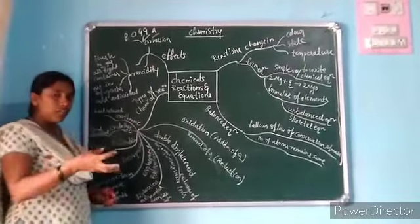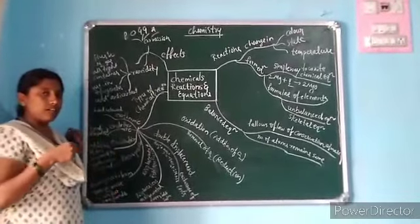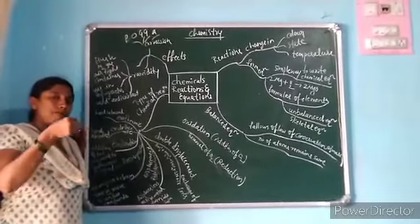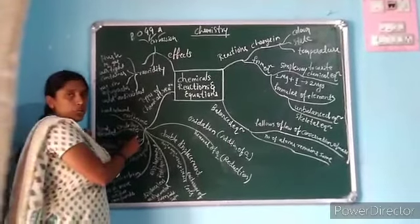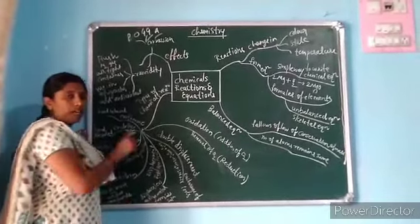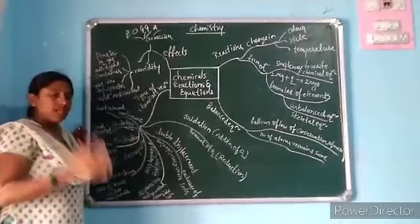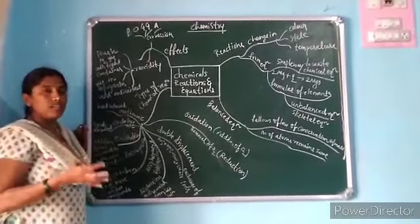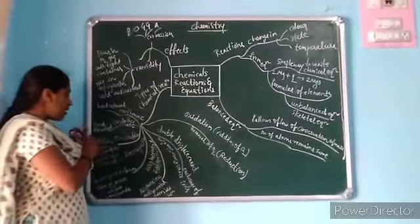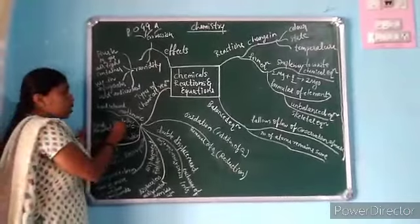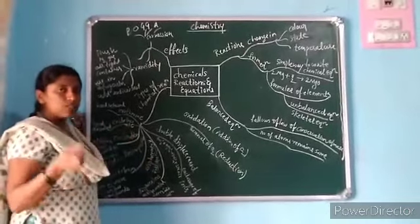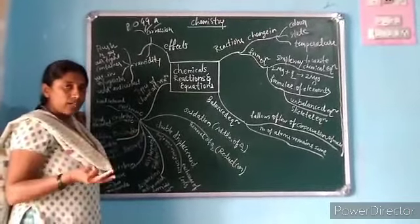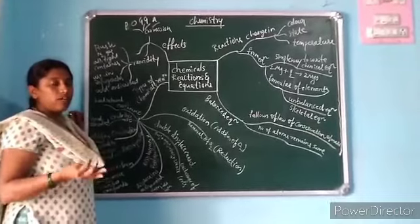And endothermic: endo means enter, thermo means heat — when heat is absorbed, it is called endothermic. For example, to break apart any compound, heat is required — that is why it is endothermic. Under endothermic reactions there are three types: photolytic, electrolytic, and thermolytic.